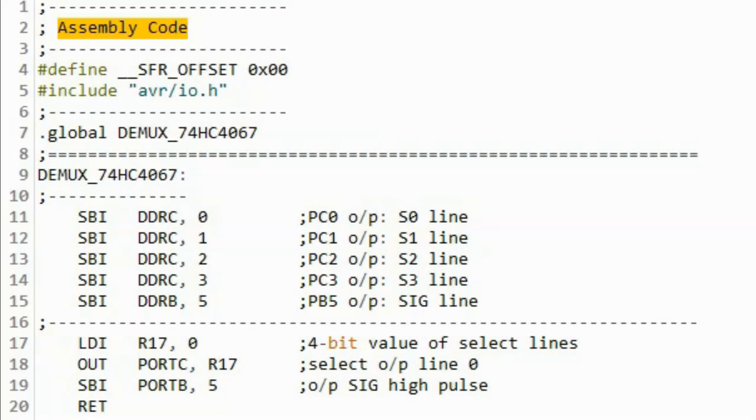In this assembly code, the switch is programmed as a demultiplexer. First, the least significant nibble of port C is designated as output, which is connected to the select lines S0 to S3. Next, pin PB5 is designated as output, which is connected to the common signal line.